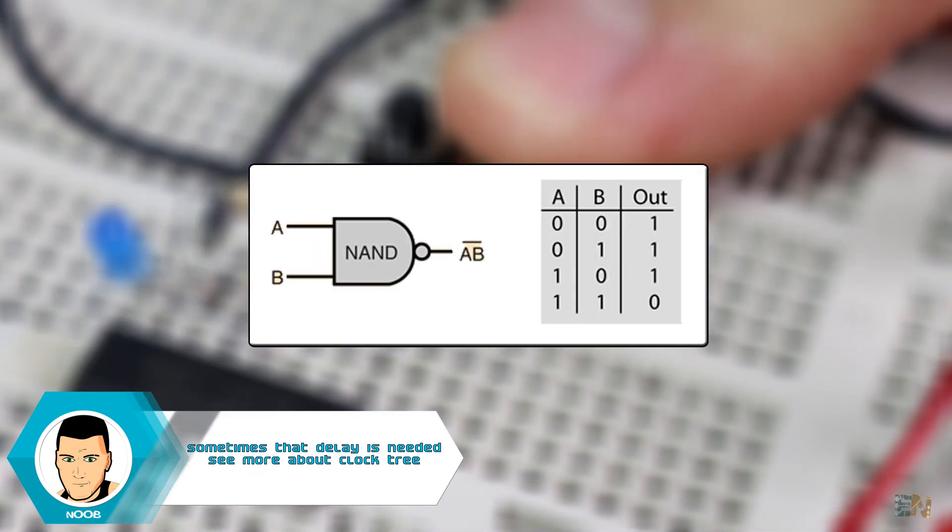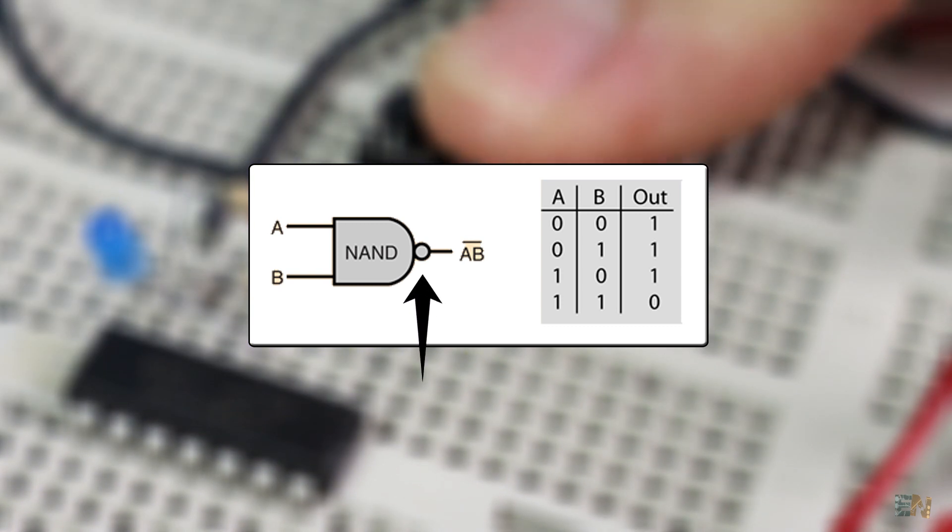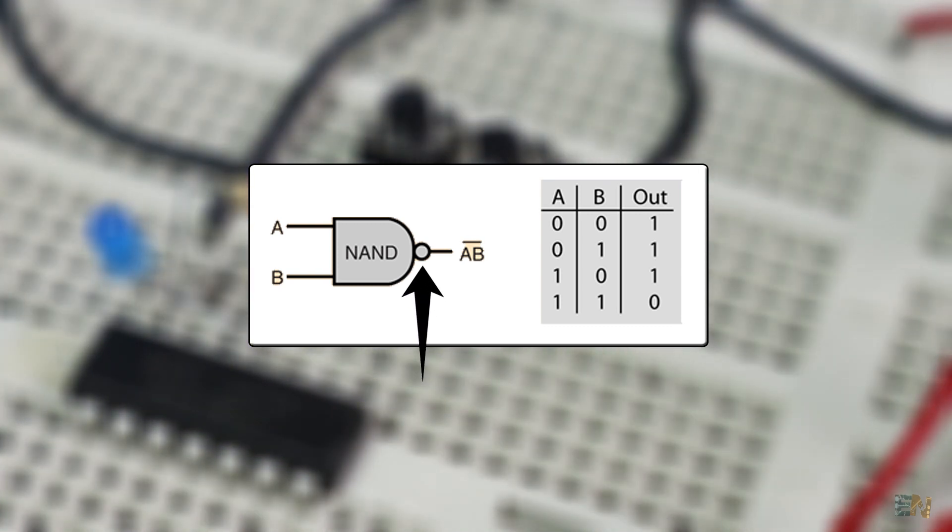The next gate is very simple. It's the same AND gate but with an inverted output, as you can see here with this circle. So that means that the truth table is reversed. In this case, the output is always 1 and 0 only when both inputs are high.